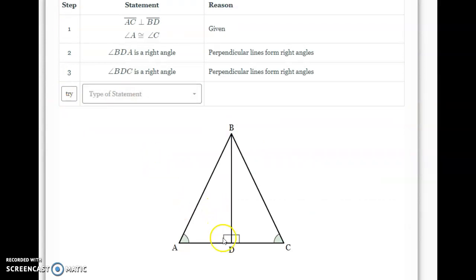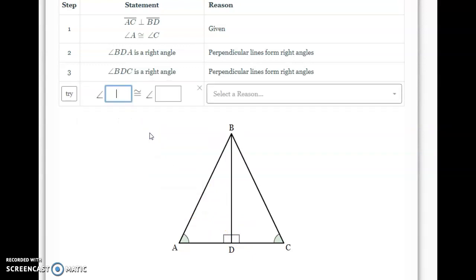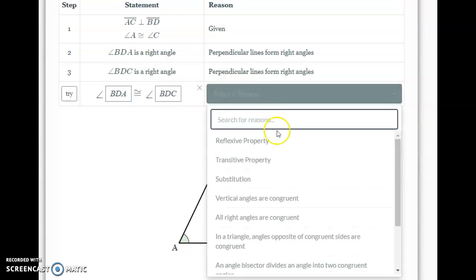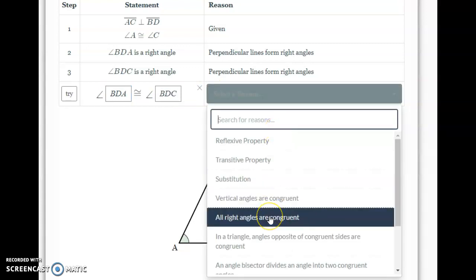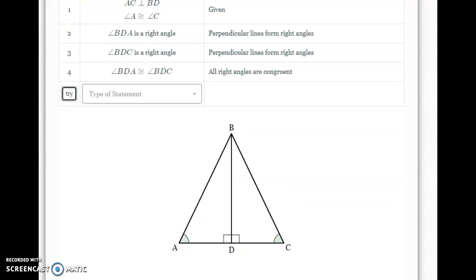Now that I have proven that these are both right angles, I can say that they are congruent. So, I'm going to pick this angle congruency statement, and I'm going to type in angle BDA and angle BDC. And my reason is going to be that all right angles are congruent.